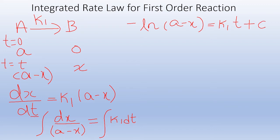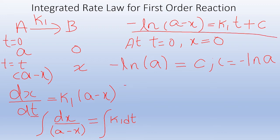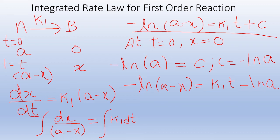To calculate the value of c, we apply the limiting condition: at time t equal to 0, the concentration of product x is 0. Substituting: minus ln(A minus 0), that is minus ln A, equals k1 times 0 plus c. So c equals minus ln A. Substituting the value of c back into the equation, we get: minus ln(A minus x) equals k1·t minus ln A. Bringing minus ln A to the left side, it becomes plus ln A, giving: ln A minus ln(A minus x) equals k1·t.